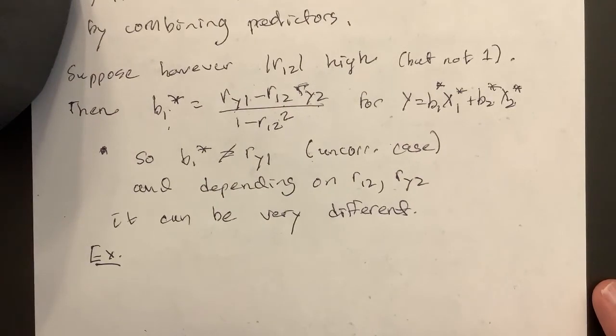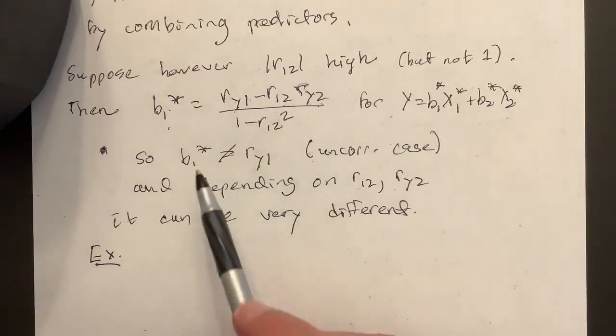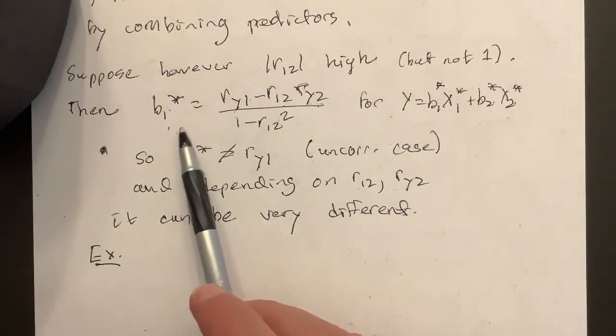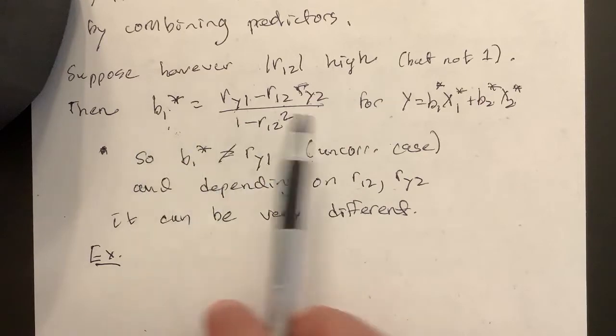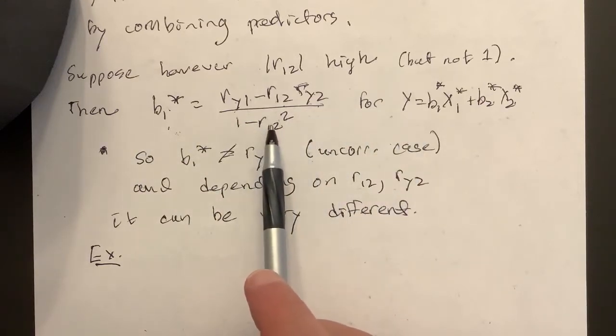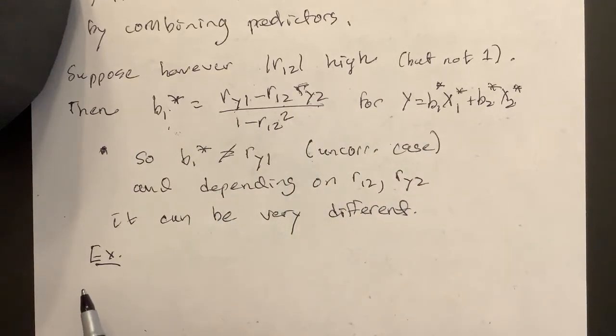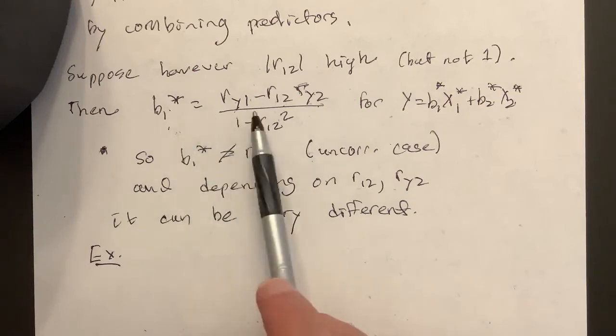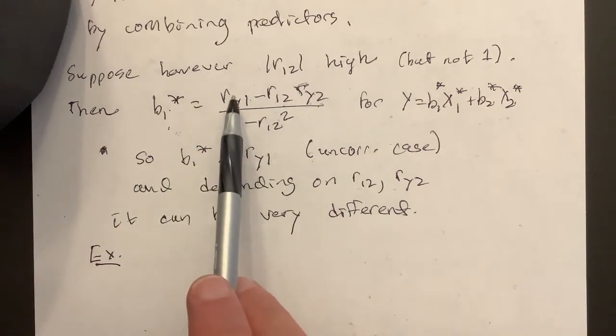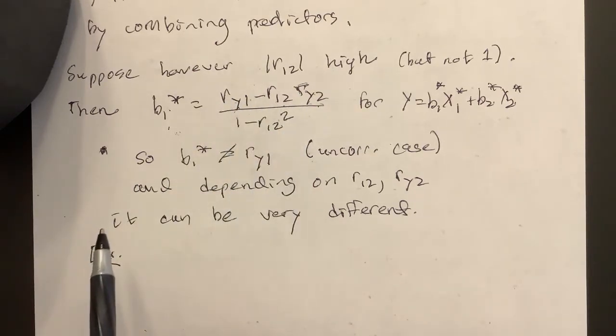We're talking about a two predictor model, and we'll look at B1 star, the standardized version of the model. I've written B1 star in terms of the simple correlations between the predictors and each predictor in the response, and we just want to play with some numbers here.